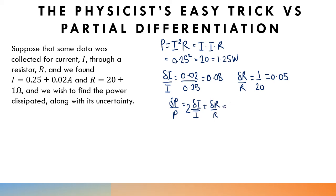So you find that the fractional error is 2 times 0.08 plus 0.05, which is 0.21, so we might see a 21% error in the power.